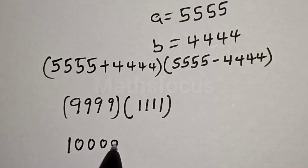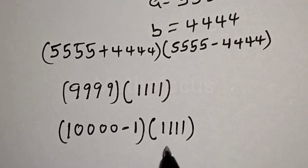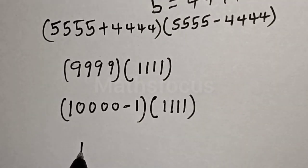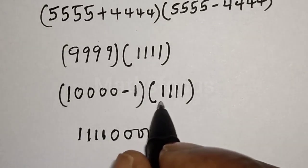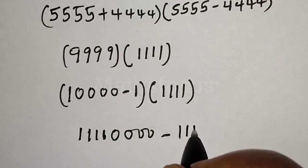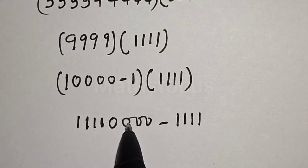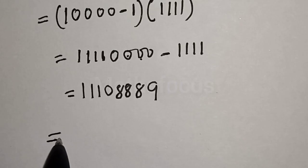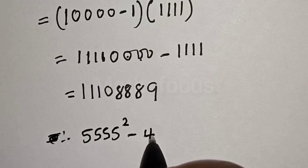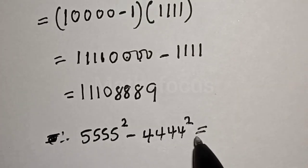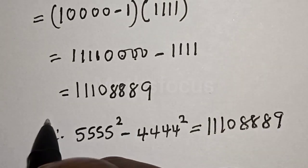Now, 9999 can be written as 10000 minus 1, then multiplied by 1111. Multiplying out: 1111 times 10000 gives 11,110,000, then minus 1111 times 1. Subtracting, borrowing as needed, 5555 squared minus 4444 squared is equal to 11,108,889, and that is our final answer.